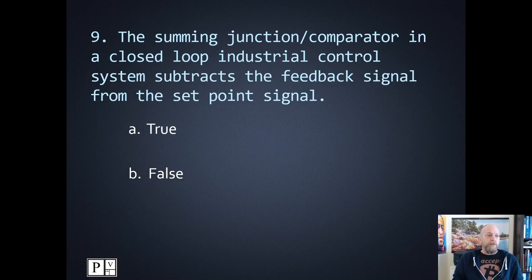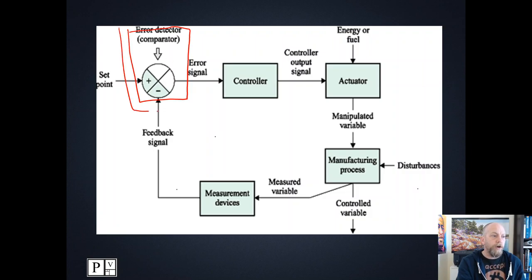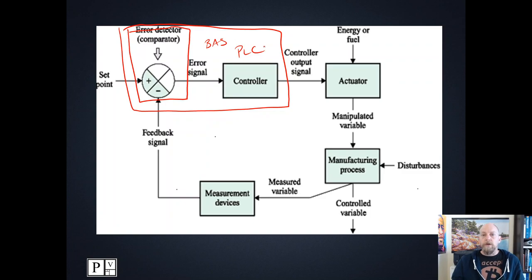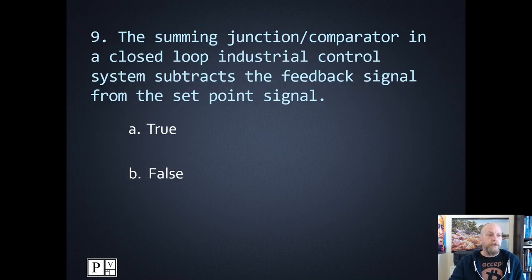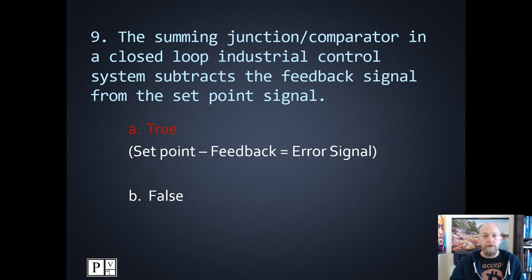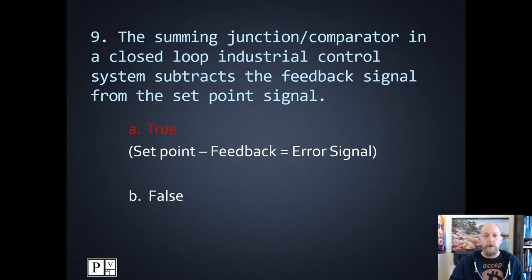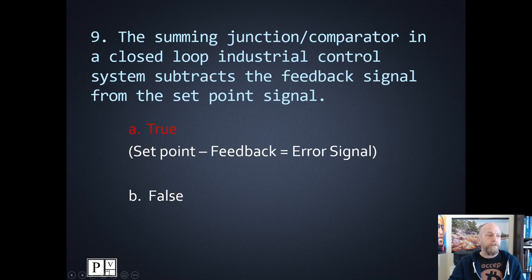Number nine: the summing junction or comparator in the closed loop industrial control system subtracts the feedback signal from the set point signal. The summing junction is right here in the block diagram. Keep in mind that the error detector or comparator is part of the controller — part of the building automation system or PLC. It's taking the difference between the set point and the feedback signal, so that one's true. The error signal is the difference between those guys, and the controller tries to accommodate for that error by sending a signal out to the actuator.